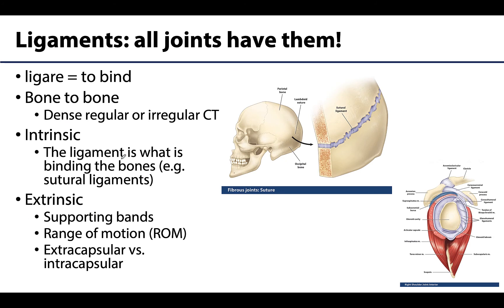Before we finish, let's talk a little about ligaments. Ligaments connect bone to bone, which is different from tendons, which connect muscle to bone. Ligaments are composed of dense regular or dense irregular connective tissue — depending on the source you may see different things.